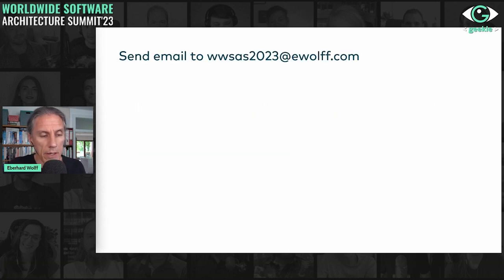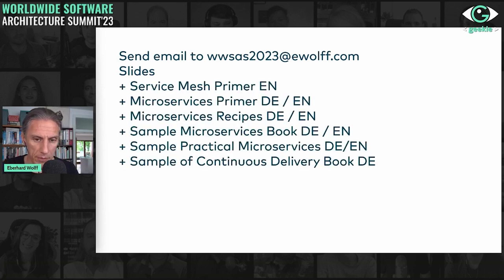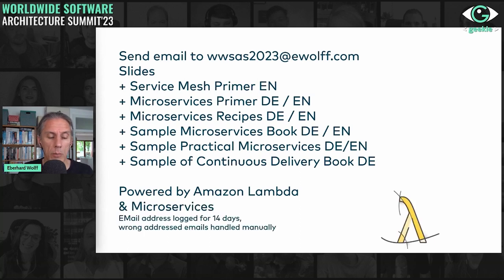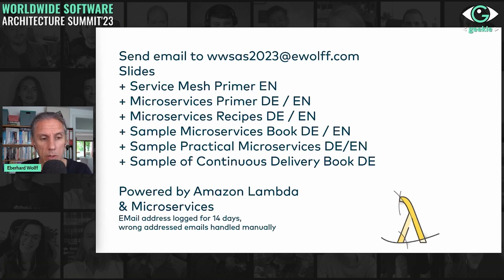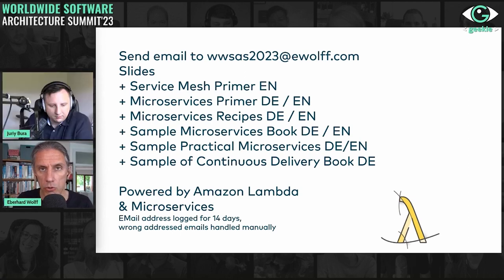If you found this interesting, there is an email address — if you send an email there you will get the slides and some of my free booklets concerning service measures and so on. This is powered by Amazon Lambda, a small serverless function and therefore a microservice. Your email address will be logged for 14 days. The email address is wwsas2023 at evolve.com — WWSAS for Worldwide Software Architecture Summit. I'm looking forward to the Q&A later on.